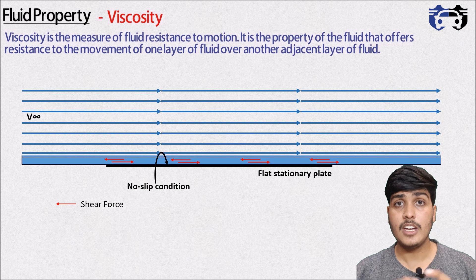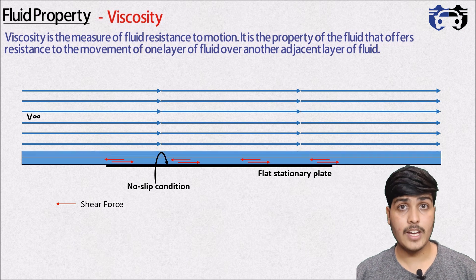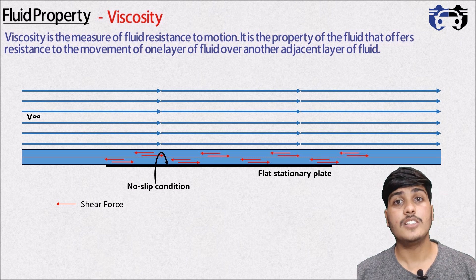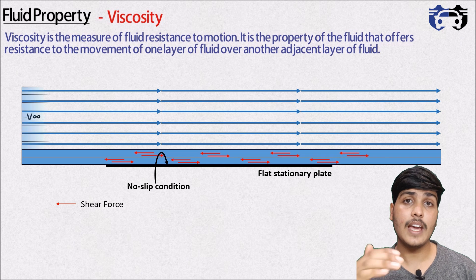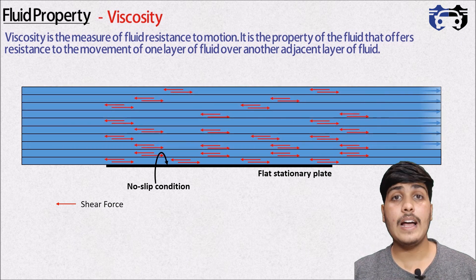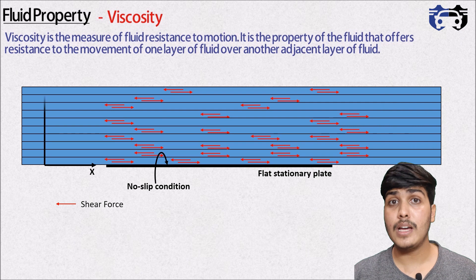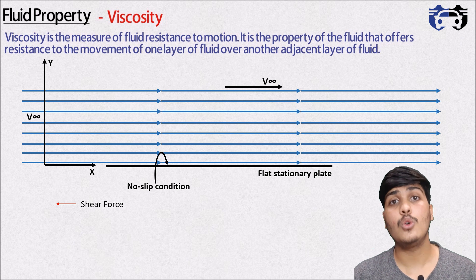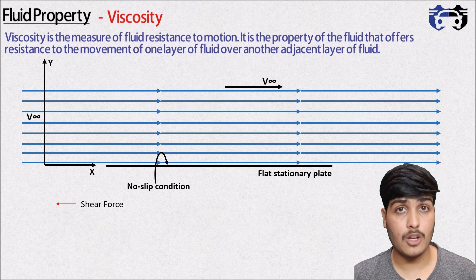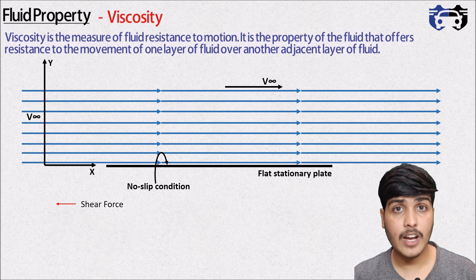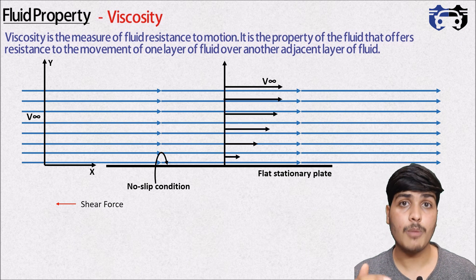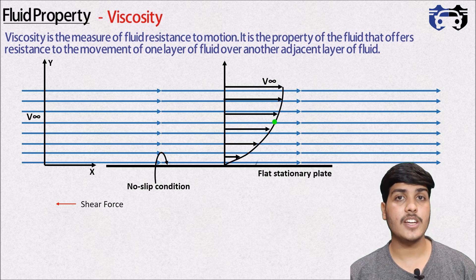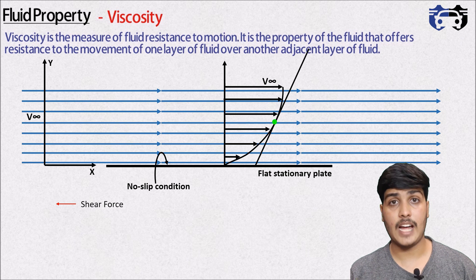Now as the bottom layer is stationary, it will try to resist the motion of the above layer and will slow down the above layer. So a shear force will exist between them also. Similarly the shear force will exist between every adjacent layer and there will be a relative motion. As we move up in the y direction, the effect of the shear force will reduce and we will get the maximum constant velocity v-infinite at the top. So the bottom most layer is moving with velocity 0 and the top layer is moving with velocity v-infinite. This will create a velocity profile between the top and the bottom layer like this. At any point on this velocity profile we will get a gradient called velocity gradient, that is du/dy.